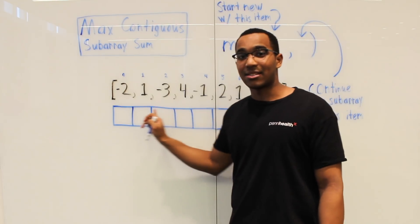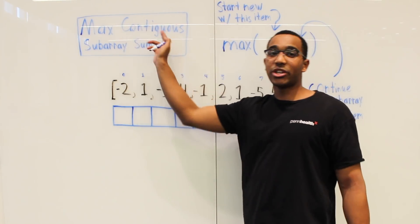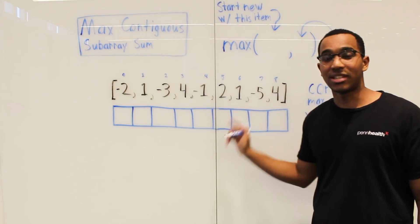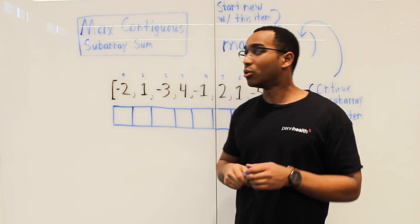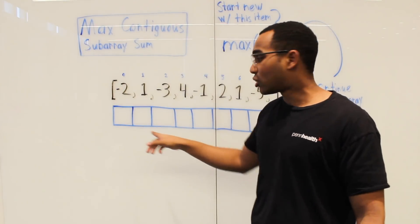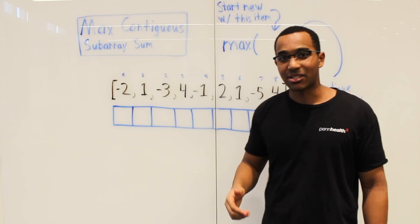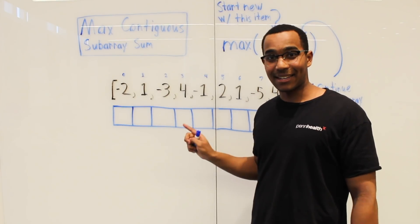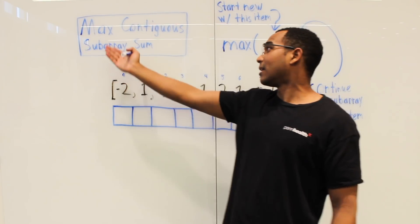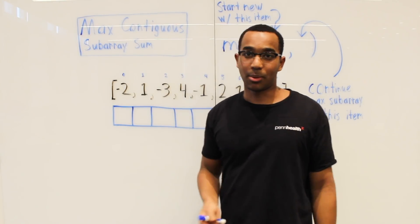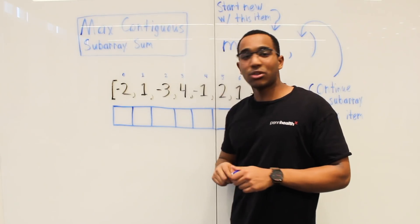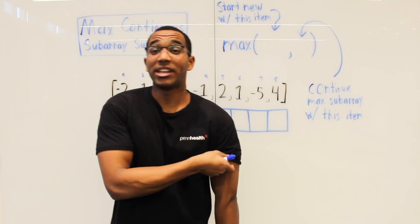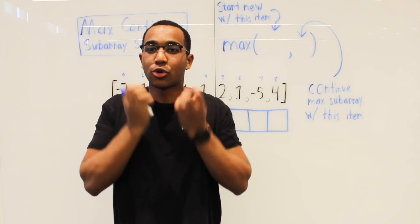Each cell asks: what is the maximum contiguous subarray sum we can achieve with subarrays ending at that index? The answer to the question for the whole array is whichever of these indices performs the best — whichever index has a subarray ending at it with the largest value.